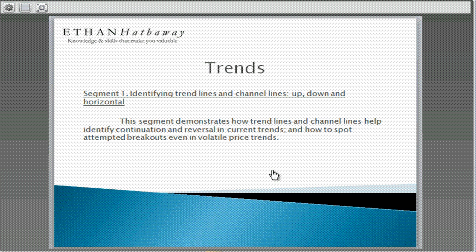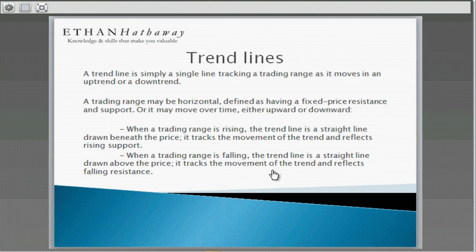In this segment you're going to see how trend lines and channel lines help an analyst or trader to identify both continuation and reversal of current trends, and spotting the all-revealing breakouts even in volatile price trends. A trend line is simply a line tracking a trading range that moves upward or downward. The trading range can be horizontal, meaning that the fixed price resistance to support moves sideways, or the entire range can evolve over time either upward or downward.